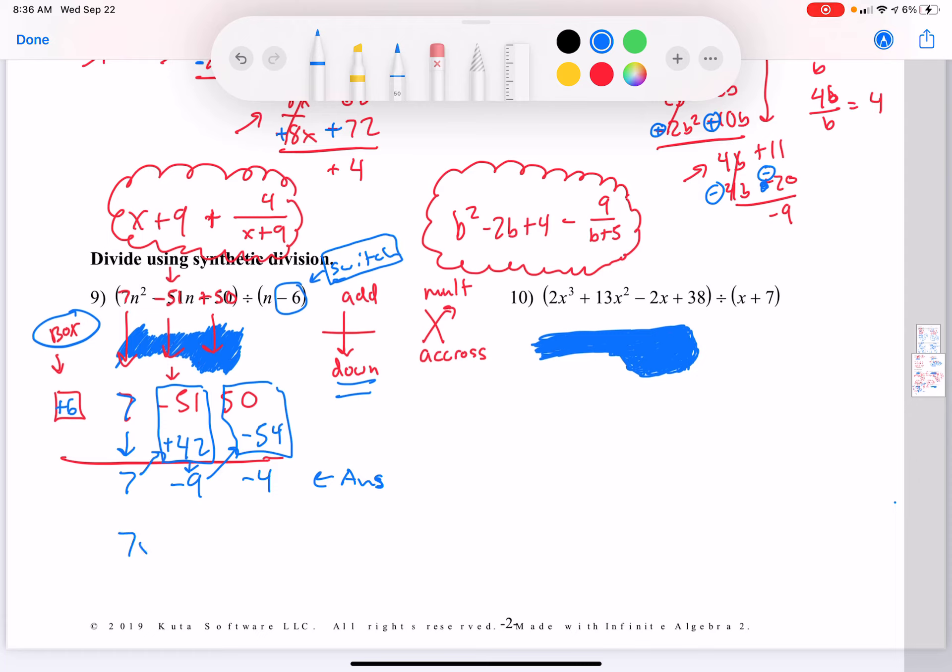And then your answer is 7n minus 9. If you put x on the quiz, it's all good. Minus 4 over n minus 6. Here, you don't use the switched version, you use the regular version.